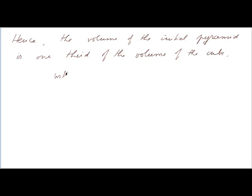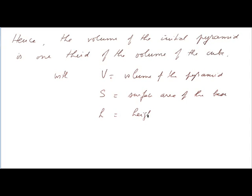Let's use some notation. With V equal the volume of the pyramid, S equal the surface area of the base, that is one side of the cube, and H equal the height, that is the length of one edge of the cube. We have V equal S multiplied by H divided by 3.